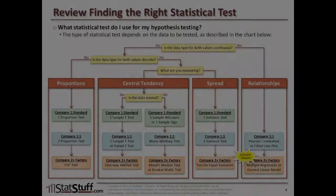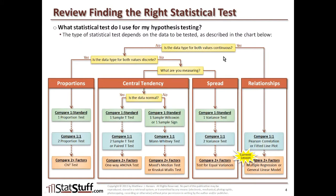Now let's review the chart for finding the right statistical test and where multiple regression and GLM fit. Looking at the familiar drill-down chart, when the data type for both values being compared are continuous or numerical, that draws us to the area where we're looking at relationships. Specifically, when we're comparing two or more factors simultaneously — unlike comparing just one factor against another at a time — we would use either multiple regression or the general linear model, also referred to as GLM. This is what we'll be covering in this lesson.